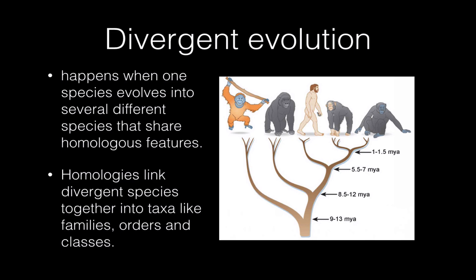Now, divergent evolution, as you can see in this picture, produces a branching tree-like line of descent for different species. So in this picture here, you can see the estimated dates in millions of years ago from where primates diverged into the living primates that we have today, known as the great apes. There are five species of great apes today: the orangutan, the gorilla, and two different types of chimpanzees. And we are on this tree. We're most closely related to the chimps because we diverged from them the most recently.